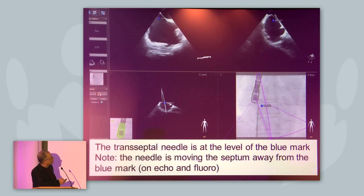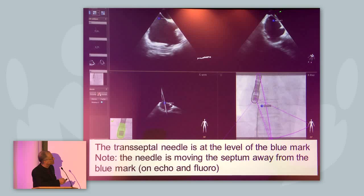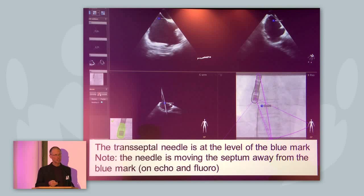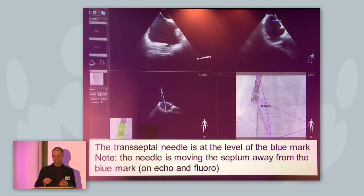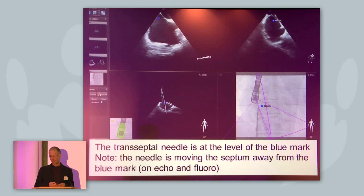Note that you can see the soft tissue has moved because the needle is pushing the septum towards the left atrium. That means the mark is not anymore at the original position, and you can see this on both echo and fluoro. So this is one of the limitations: if the soft structure is moving or changing position during the procedure, then the marks are obviously not reliable anymore.